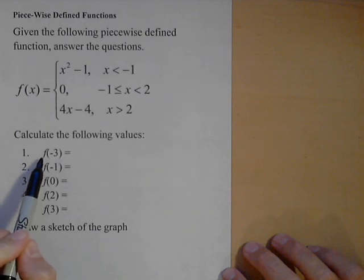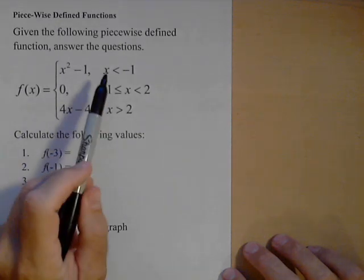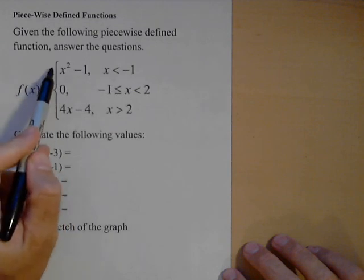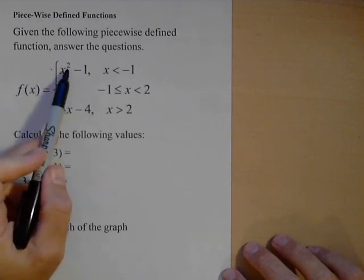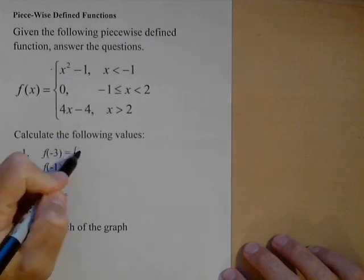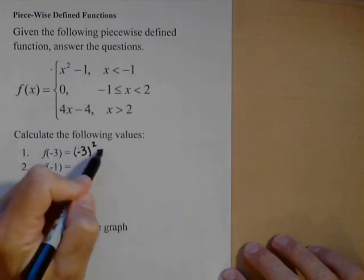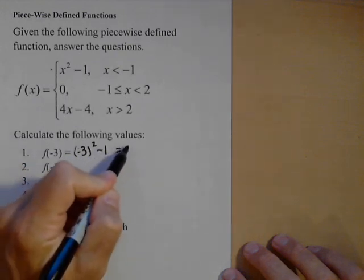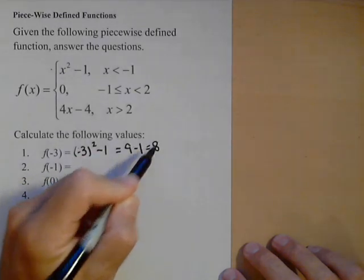So we're asked to find f of negative three. First thing with a piecewise defined function, we've got to figure out which piece we're using if x is negative three. Negative three is less than negative one, so we're going to use this first piece. The function when x is less than negative one looks like x squared minus one, so we would have negative three squared minus one, or nine minus one, which is equal to eight.